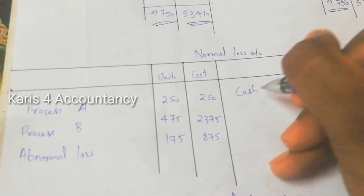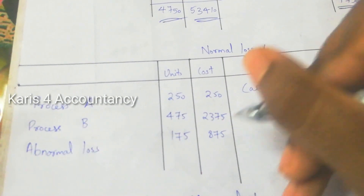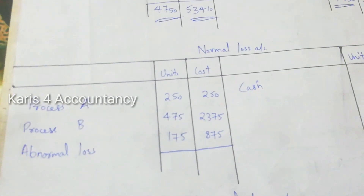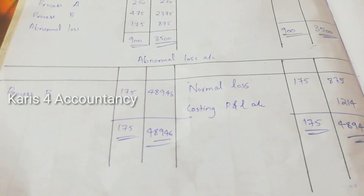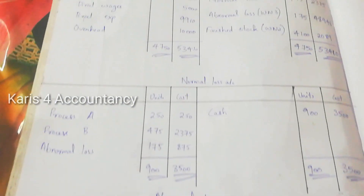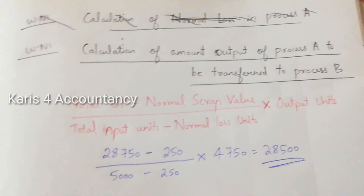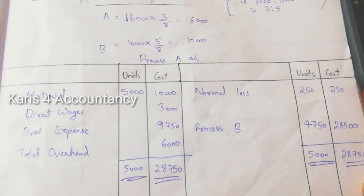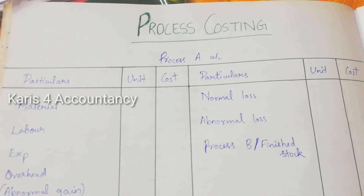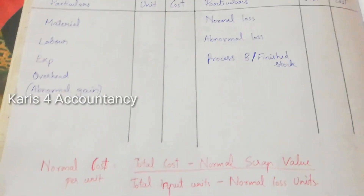Now this covers the process costing question. There is another way to present the working. The process question is very simple — you can edit the working note as needed. Please share this video, and please like, share, and comment. Thank you.